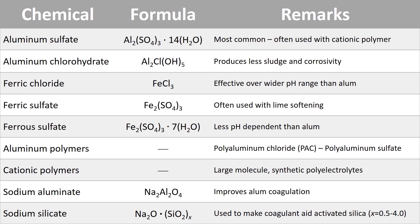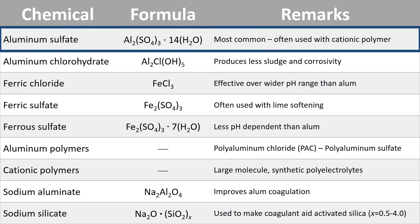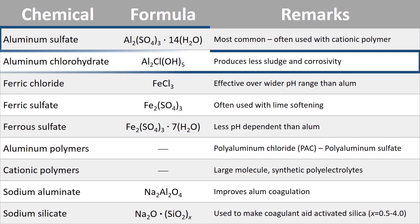This chart shows the different coagulants that are commonly used. First is aluminum sulfate, the most commonly used coagulant, and it's often used in conjunction with a cationic polymer — a polymer that gives off positive ions once dissolved in water. Next is aluminum chlorohydrate, which is also aluminum-based, and it produces less sludge and is less corrosive than aluminum sulfate.